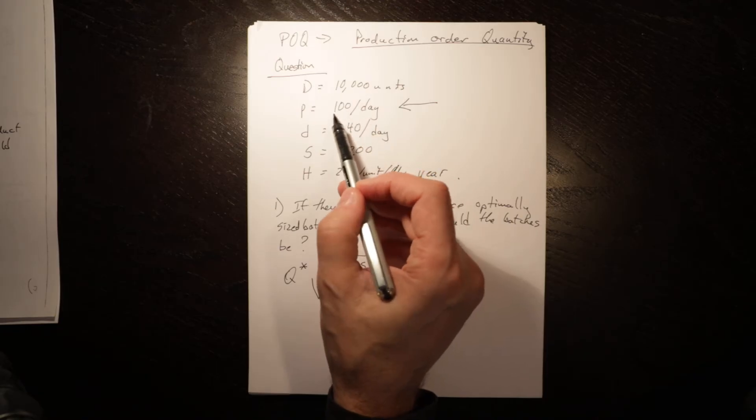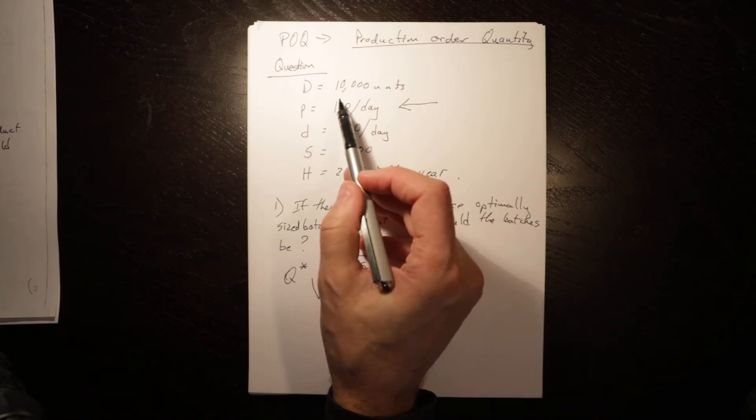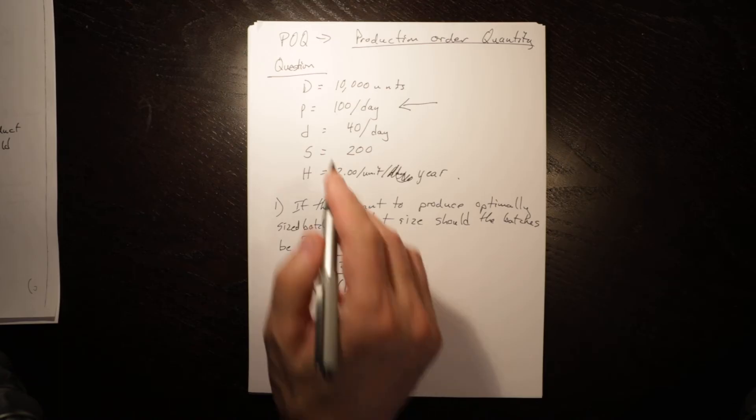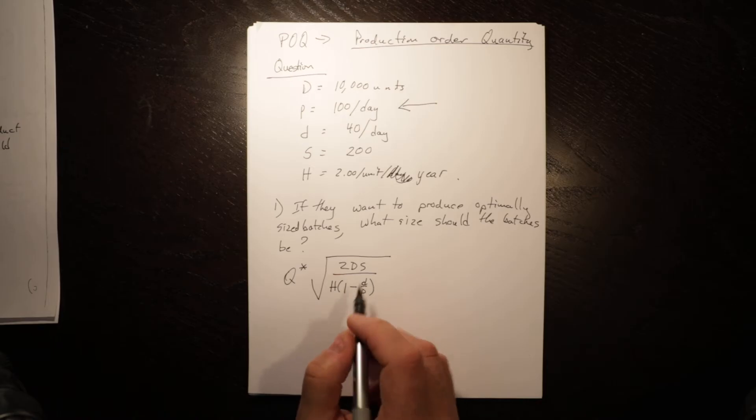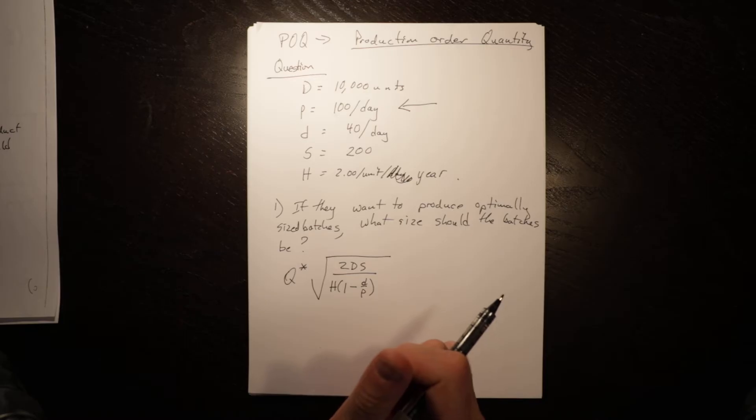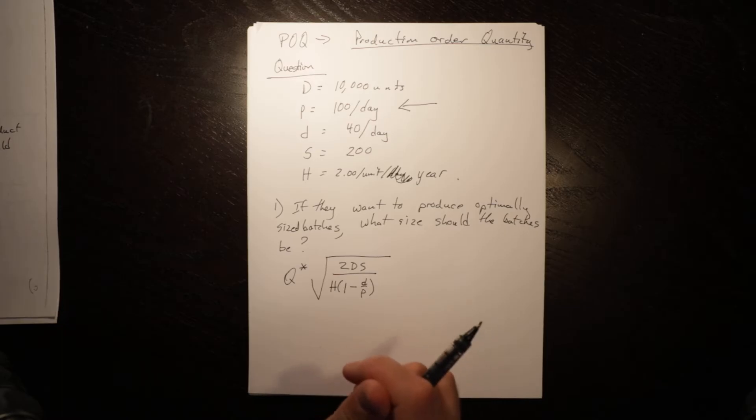Because the daily demand rate needs to always be smaller than the production rate or you just won't be able to keep up. And so this allows inventory to build up. And so we know this is smaller than this, so this is a number less than one, and what we're saying is we are having holding costs essentially that are lower than they would be under the EOQ because our inventory never gets up to the level of the order quantity.